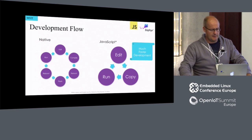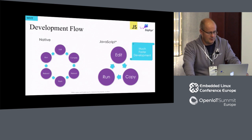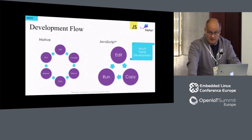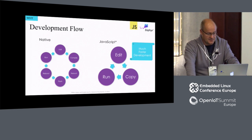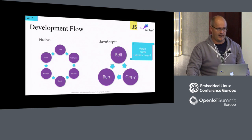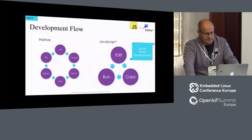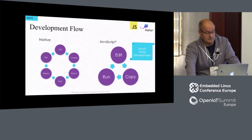Another benefit I touched on is the development flow. On the native side, the cycle is that you edit your code, compile it, link it, reboot your device, flash your image, reboot again, and run it. If something goes wrong, you repeat the cycle. Whereas on the JavaScript side, the cycle is simpler: you edit your code, copy it to the target, run it — and that's it. The cycle is shorter and faster.